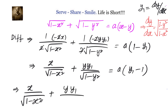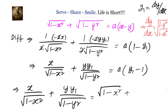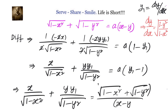We write x over √(1 minus x²) plus y·y1 over √(1 minus y²) equals — replacing 'a' — square root of (1 minus x²) plus square root of (1 minus y²), all divided by (x minus y), times (y1 minus 1).